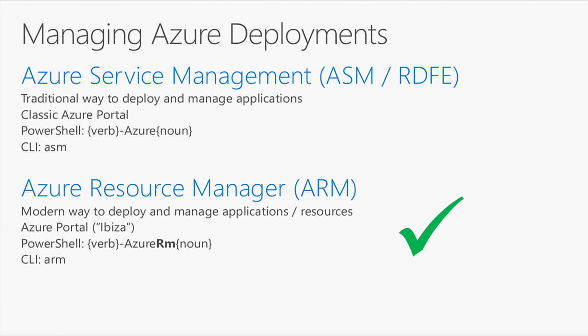You'll see it in the classic Azure portal at manage.windowsazure.com. In PowerShell, you'll see something-Azure and then the noun you wanted to work with. In the command line tools, it's the ASM mode. For anything new, you should probably be moving towards — or definitely already using — Azure Resource Manager, or ARM.